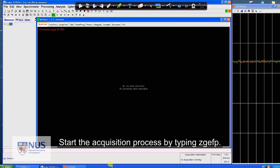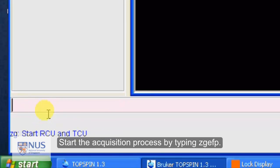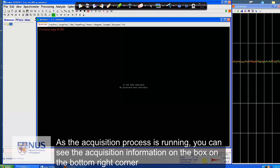Start the acquisition process by typing ZGEFP. Enter. Enter. As the acquisition process is running, you can see the acquisition information on the box on the bottom right corner.